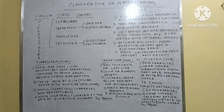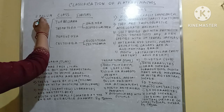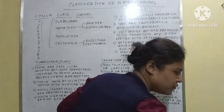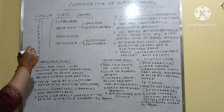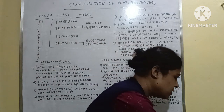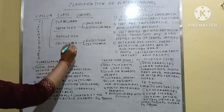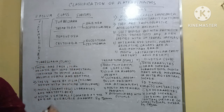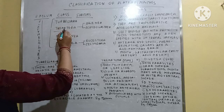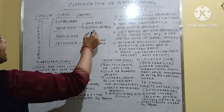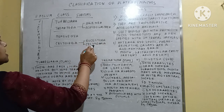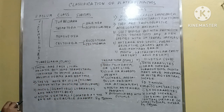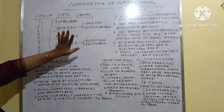Platyhelminthes is a phylum and there are four classes. The four classes are: first, Turbellaria; second, Trematoda; third, Monogenea; and fourth, Cestoidea. The subclasses under Trematoda are Digenea and Aspidogastra. Under Cestoidea, there are two subclasses: Eucestoda and Cestodaria. These are the actual classes and subclasses according to Rupert Barnes.